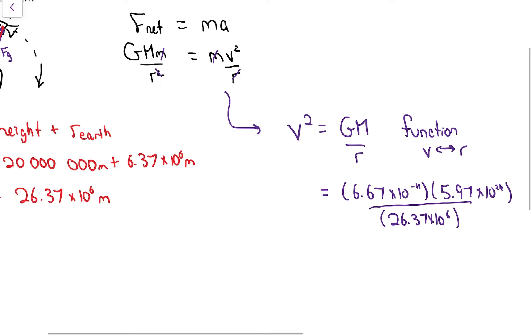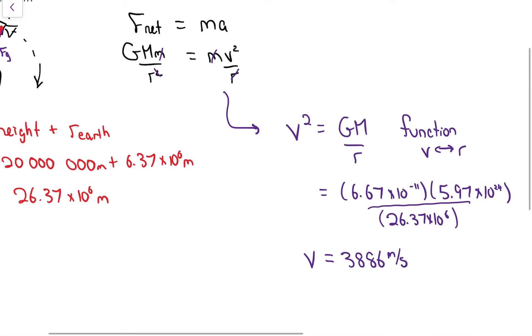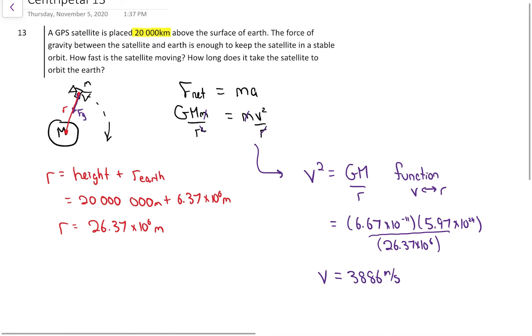And then we've got to crunch it out. We've got a square root to deal with. When I practiced it, I got 3886 in meters per second. So every satellite that's 20,000 kilometers above Earth, they would all be going 3,886 meters per second.